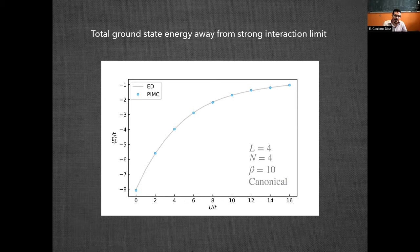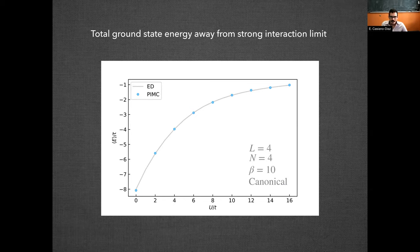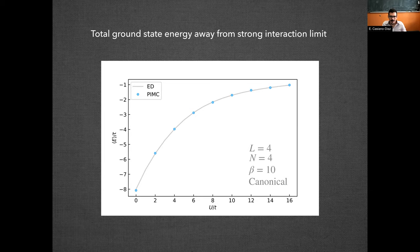So now we crank down this interaction strength significantly just to observe the effect of this lower interaction regime. And here we're studying the ground state energy as a function of interaction strength in a canonical simulation. And again, our path integral Monte Carlo data seems to agree in this case with the exact diagonalization results.